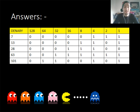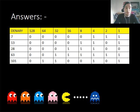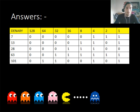Here you can see the answers to those questions. Number 7 is represented by turning a 4, a 2 and a 1 on. At number 13, you turn the 8 and the 4 on, which makes 12, then turn the 1 on, which makes 13. 28 is 16 plus 4, which makes 20, plus the 8 — that's 28. For 63, a little cheat: if you have to make a number such as 31, you turn on all the switches after the next biggest number value. And 101 is 64 plus 32 plus 4 plus 1.